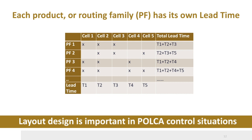Product family 1, for instance, needs cell 1, cell 2, and cell 3. The lead times for these cells are T1, T2, and T3. This implies that the total lead time for product family 1 is T1 plus T2 plus T3. Here it becomes clear that layout design and lead time setting for the cells is an important element in the design of the whole POLCA system.